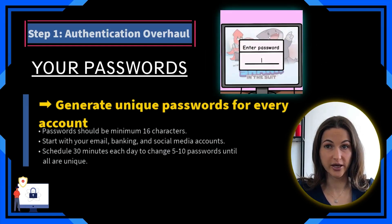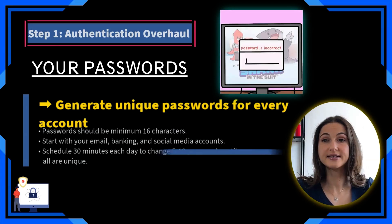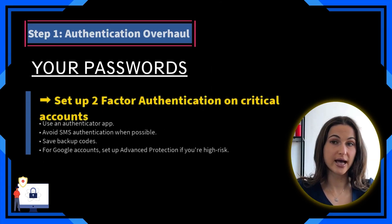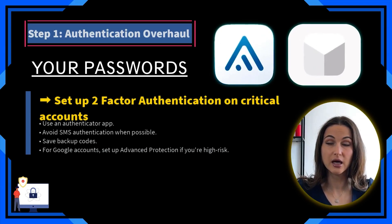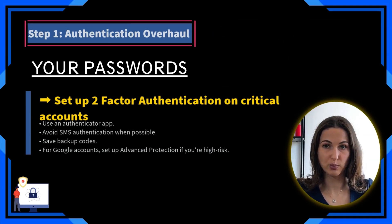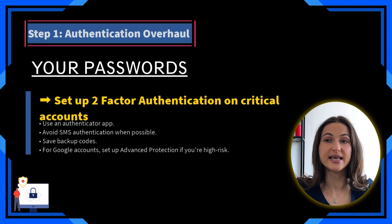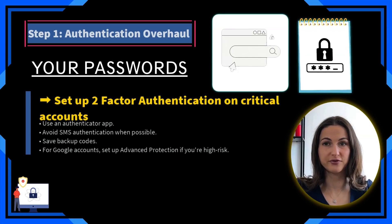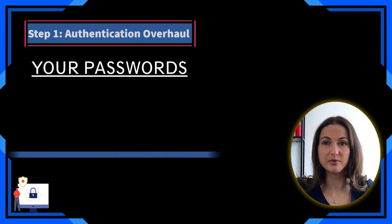Schedule 30 minutes each day to change five to ten passwords until all are unique. Next, set up two-factor authentication on critical accounts. Use an authenticator app like Aegis for Android or Tofu for iOS. Avoid SMS authentication when possible due to SIM swapping vulnerability. Save backup codes in your password manager and print them physically. For Google accounts, set up advanced protection if you're high risk.